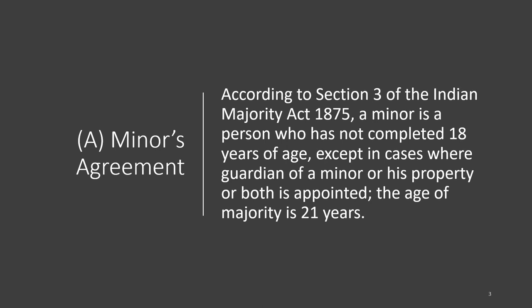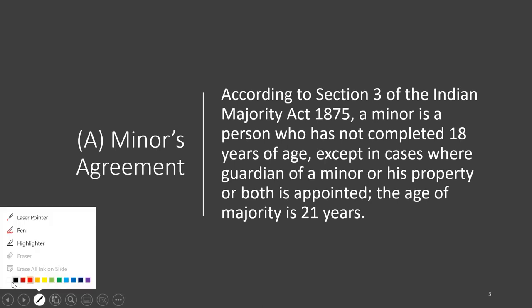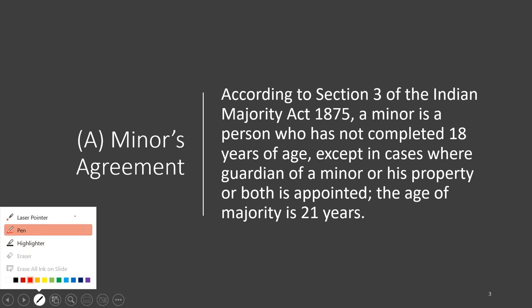Except in cases where a guardian of a minor or his property or both is appointed, the age of majority is 21. So generally the age of majority is 18, but in certain scenarios that same age of majority becomes 21. We just need to understand that in certain scenarios the age is 21, but generally it is 18 years of age.